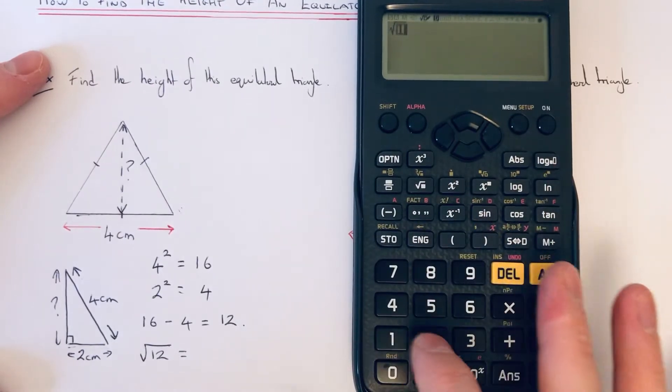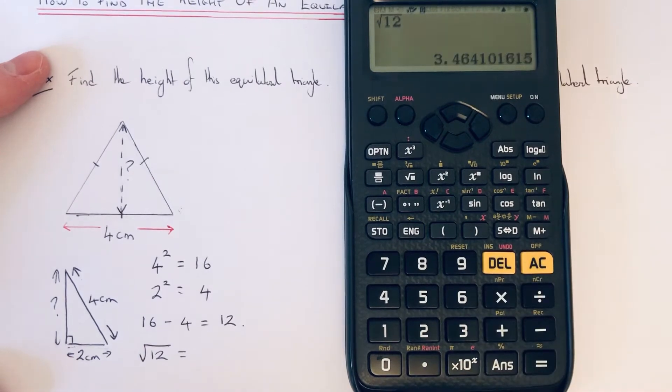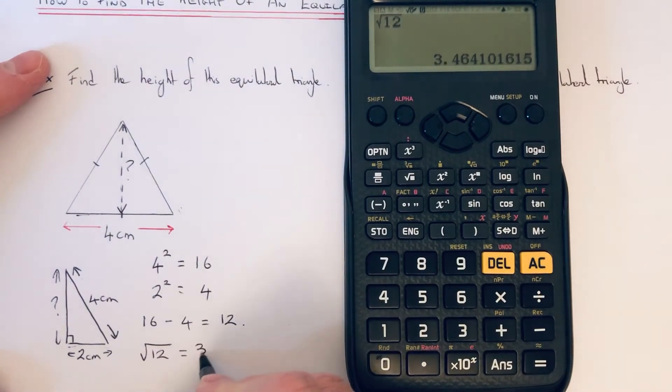So square root of 12 is equal to 3.5 to one decimal place.